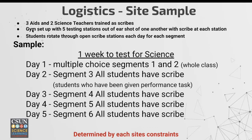At this specific site, they chose their gym and set it up with five testing stations out of earshot from one another, and students rotate through the open scribe stations each day for each segment. They've taken one week as their testing window for science. Day one, all students complete sections one and two — the whole class — which is the multiple choice component of the test. Day two, students who receive a performance task on segment three take their computer, go to the gym, wait for an open scribe, and end with segment three.